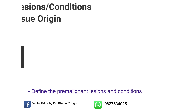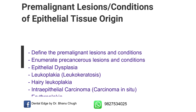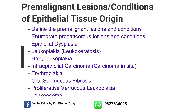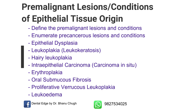Next, pre-malignant lesions or conditions of epithelial tissue origin. This is extremely important and there's definitely going to be a question on this — please read this part very carefully. The important topics are: define pre-malignant lesion and condition, enumerate pre-malignant or precancerous lesions and conditions, epithelial dysplasia, leukoplakia, hairy leukoplakia, intraepithelial carcinoma or carcinoma in situ, erythroplakia, and OSMF. These are extremely important topics and definitely there is going to be a question on one of these. Proliferative verrucous leukoplakia and leukoedema are not very frequently asked, but you should at least know about these.